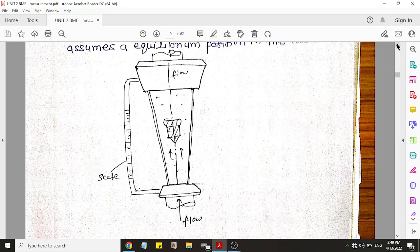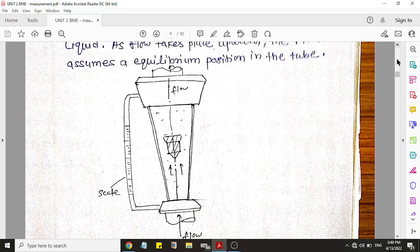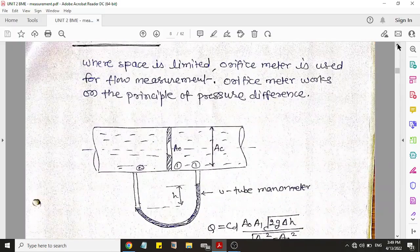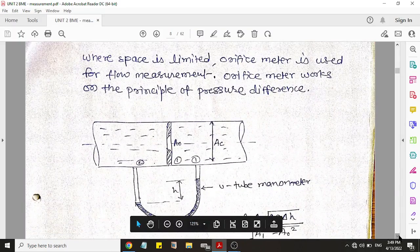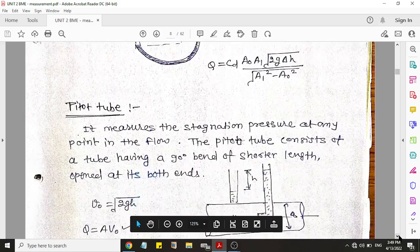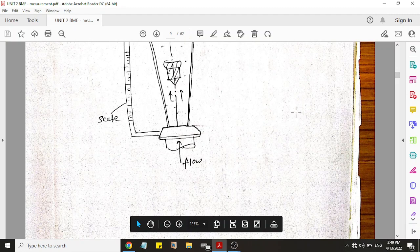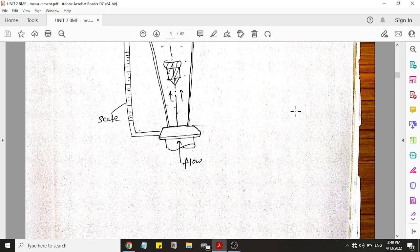So today I told you about four methods. First was venturimeter, second was orifice meter, third is pitot tube, and fourth one is the rotameter. These all four methods are used according to the situation. If pipe is horizontal then you have to use venturimeter.